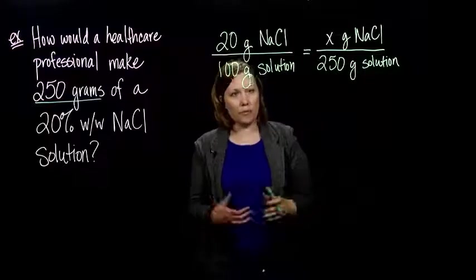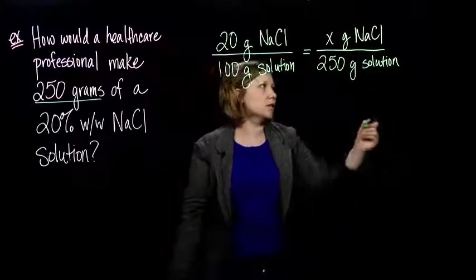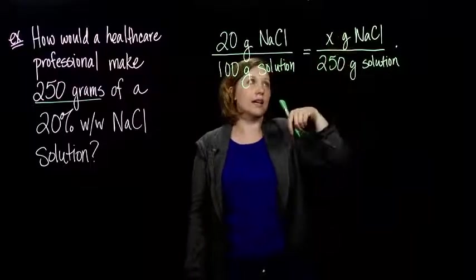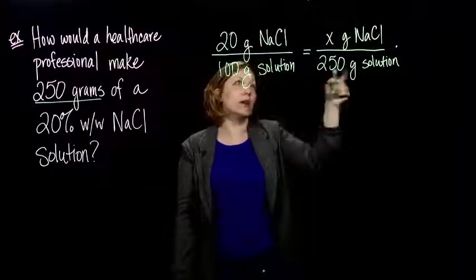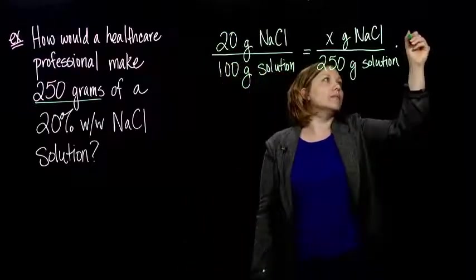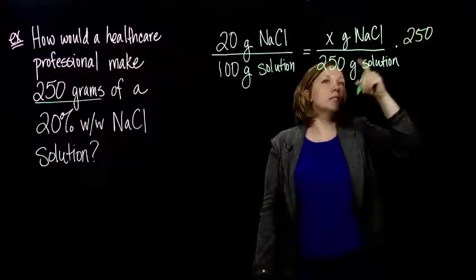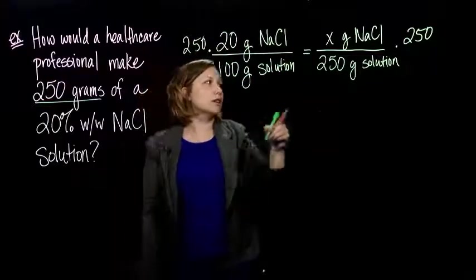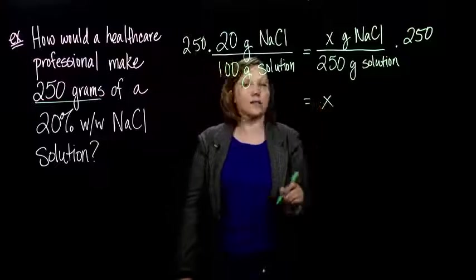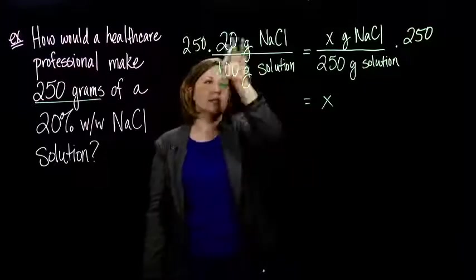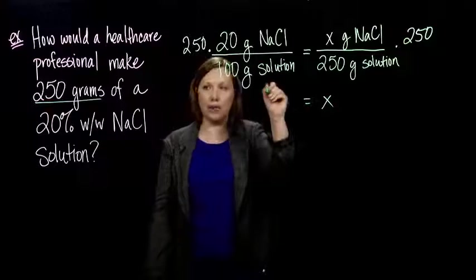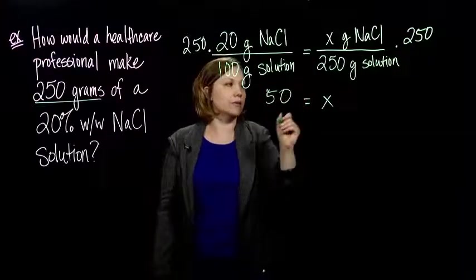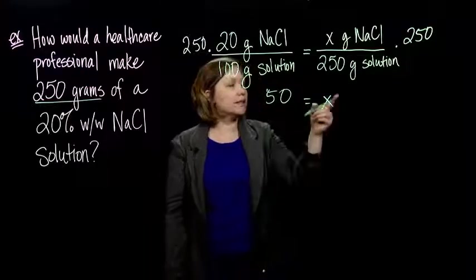Now all we have to do is solve this proportion. If you notice, all the units are going to actually cancel out. So multiply on both sides by 250 to get rid of this 250 on the other side, and that leaves us with just x on the right side. And then on the left side, when we simplify all the fractions, we end up with just 50 grams. So x is 50.